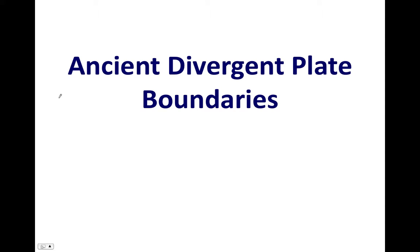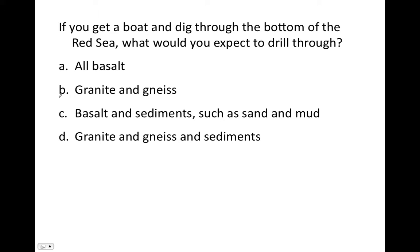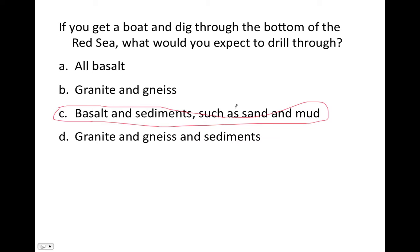Now we're going to look at evidence of ancient divergent plate boundaries. If you got into a boat and went out into the Red Sea and dug down through it, what would you expect to drill through? A, all basalt. B, granite and gneiss. C, basalt and sediments such as sand and mud. D, granite and gneiss and sediments. Well, we would expect to find some basalt, but maybe something else besides basalt. We wouldn't expect to find granite and gneiss — granite being intrusive igneous rock and gneiss being a metamorphic rock. What we could expect to find is basalt from the volcanism along the divergent plate boundary forming the Red Sea, and sediments accumulating in that valley and at the bottom of the Red Sea. So we'd expect to find basalt and sediments such as sand and mud.